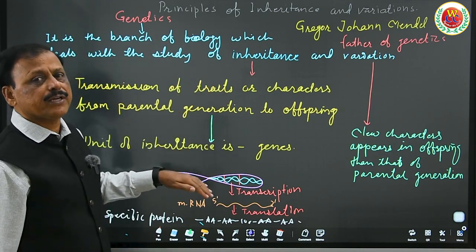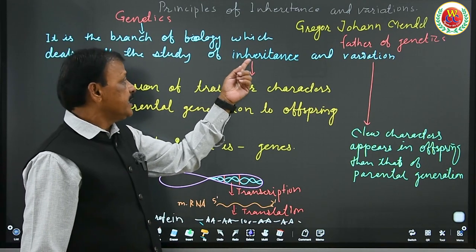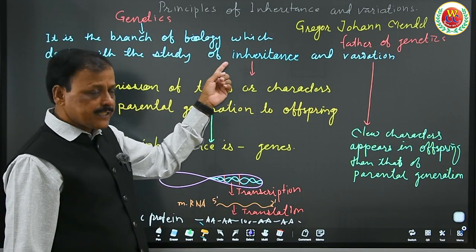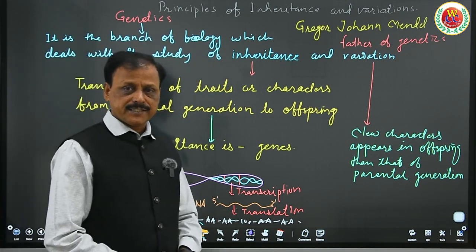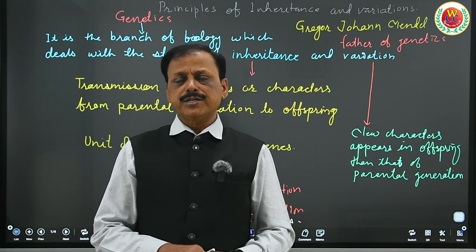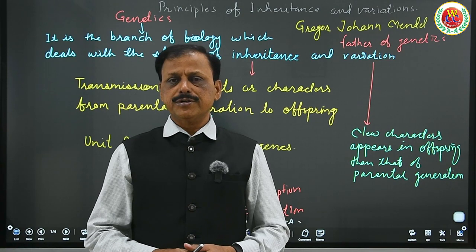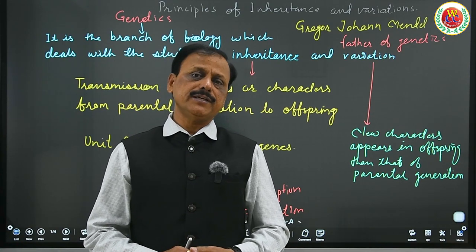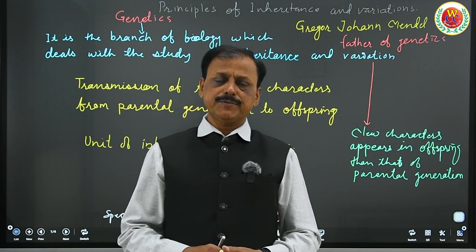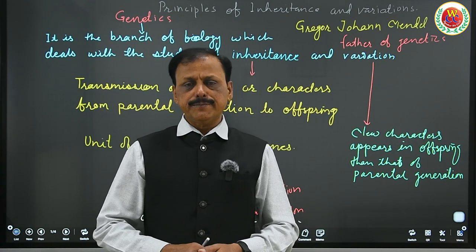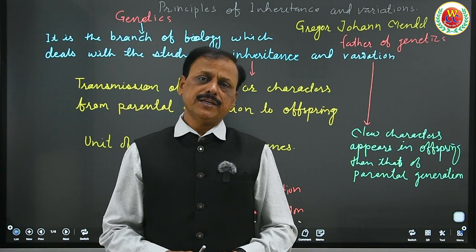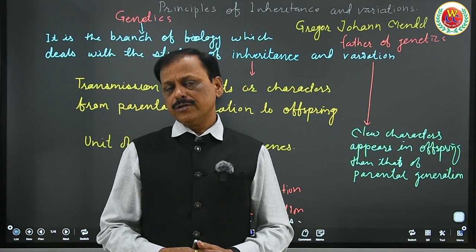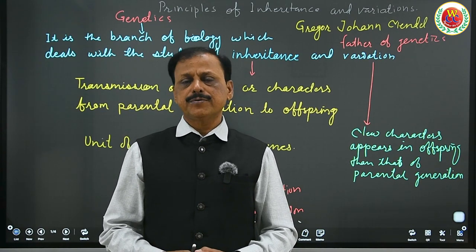That transfer from one generation to another generation is known as inheritance. Inheritance is the process through which characters are transferred from one generation to another generation, and the branch of biology which studies this is called genetics. Gregor John Mendel was very, very intelligent — he was able to see what none of the individuals before him could see: exactly what factors present within us control our characters.